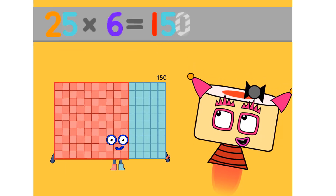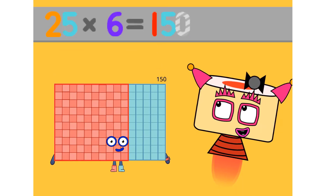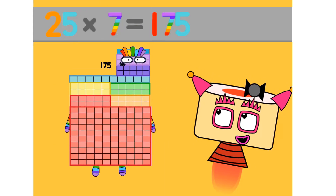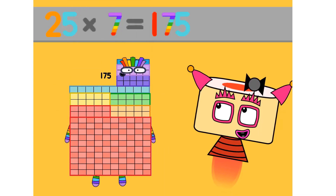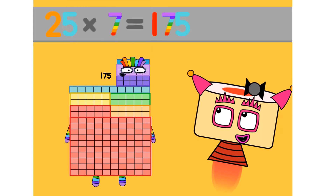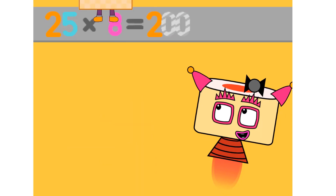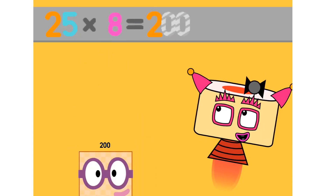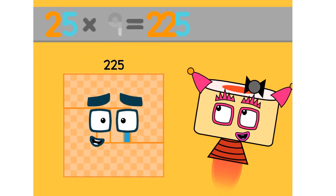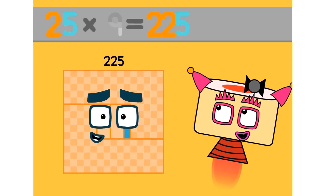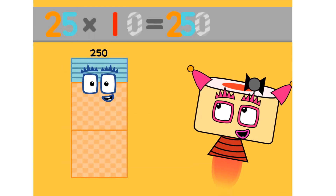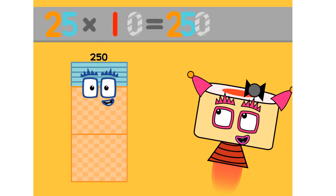25 times 6 equals 150. 25 times 7 equals 175. 25 times 8 equals 200. 25 times 9 equals 225. 25 times 10 equals 250.